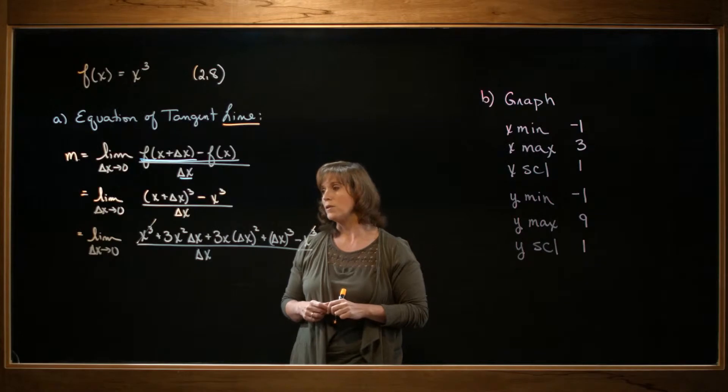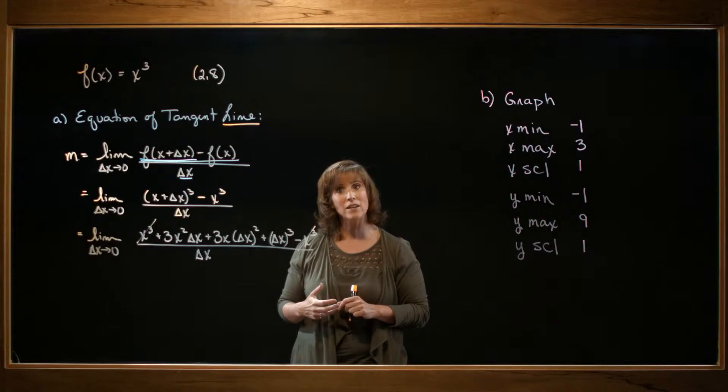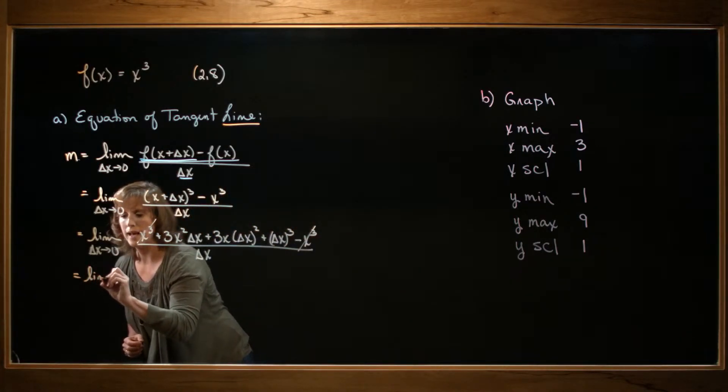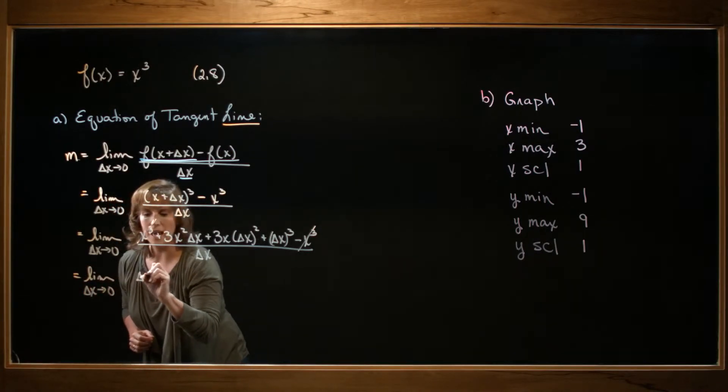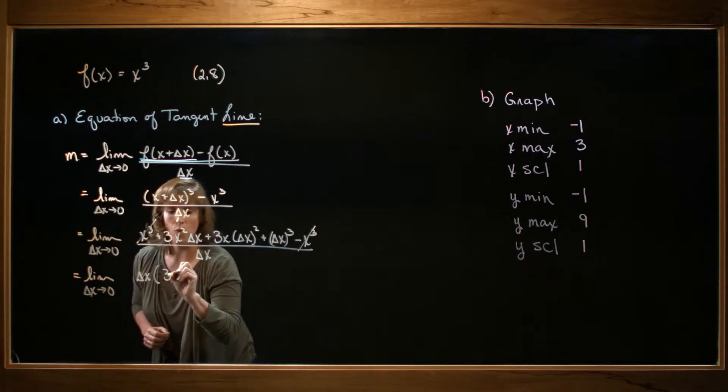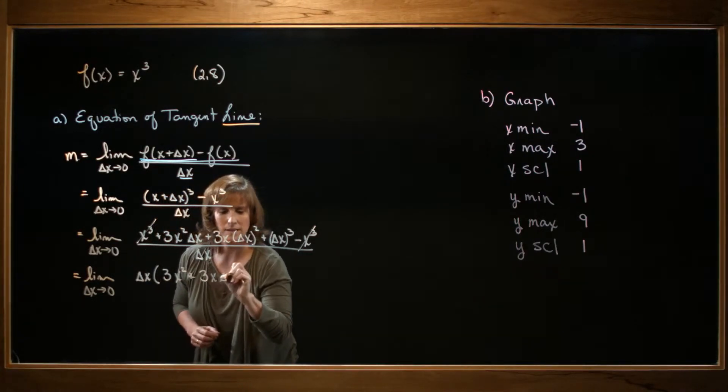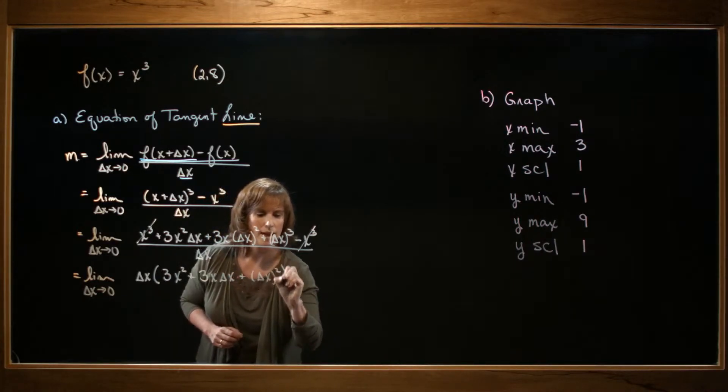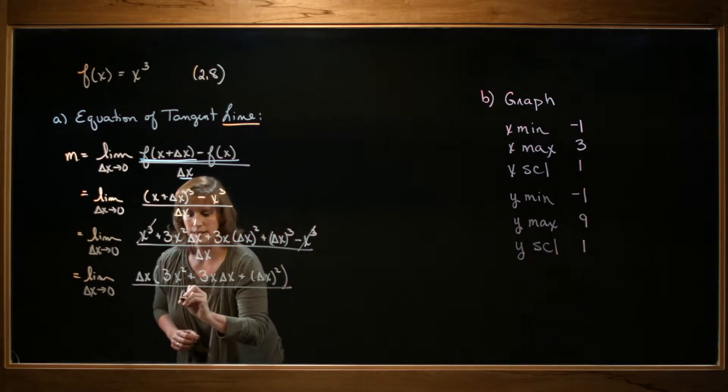I also notice that everything that's remaining in the numerator has a delta x in it. So I can factor delta x out. So I'll have the limit as delta x approaches zero of delta x times the quantity 3x squared plus 3x delta x plus delta x squared. And that still is all divided by delta x.